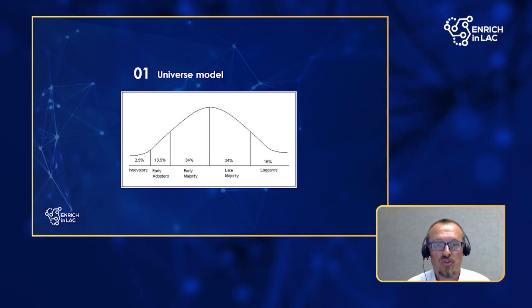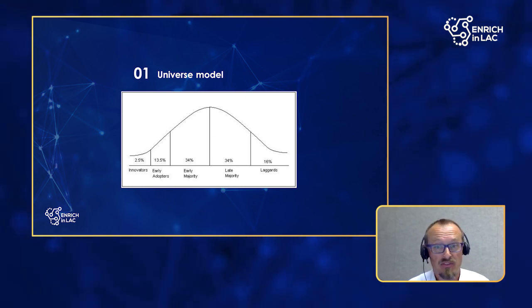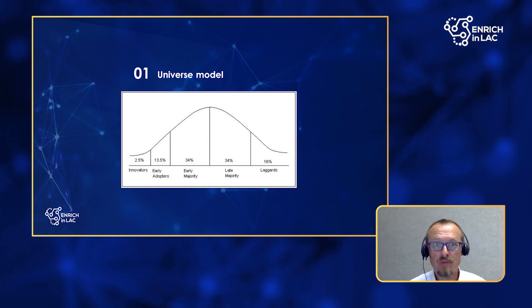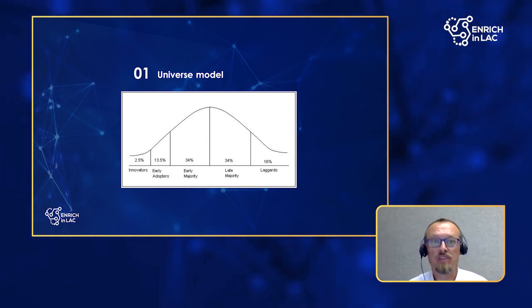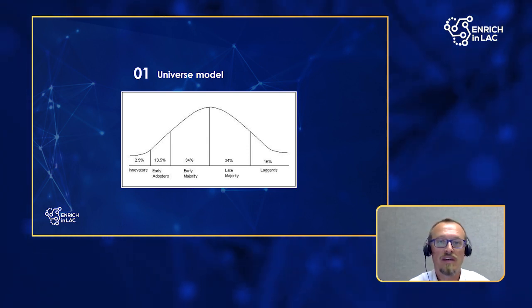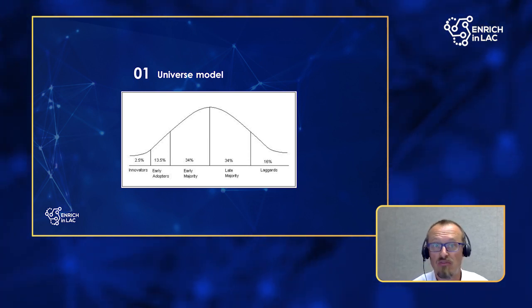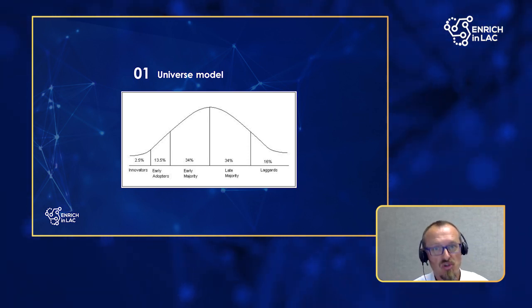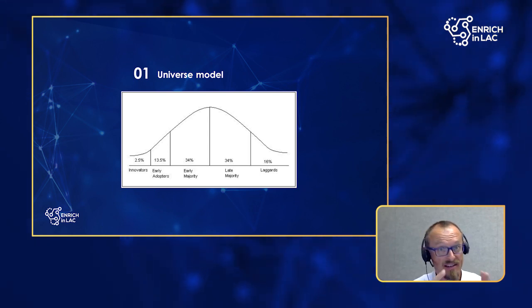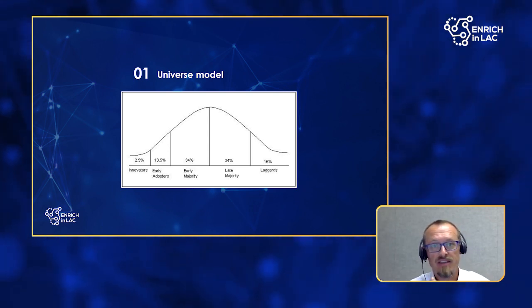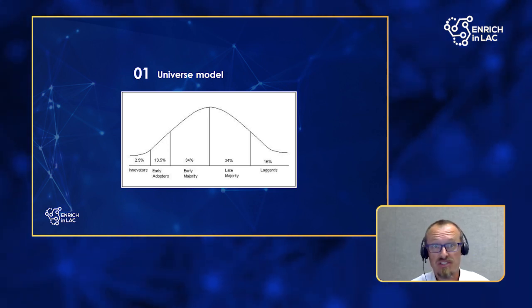Let's have a look at this model. Here you can see a typical bell curve, and if you're representing a disruptive technology it's important that finding first clients and doing a proof of concept, only 2.5% of all potential business clients are interested in you. So search for the most innovative companies and get in contact with them. You can see that the early adopters are just 13.5% and so on.